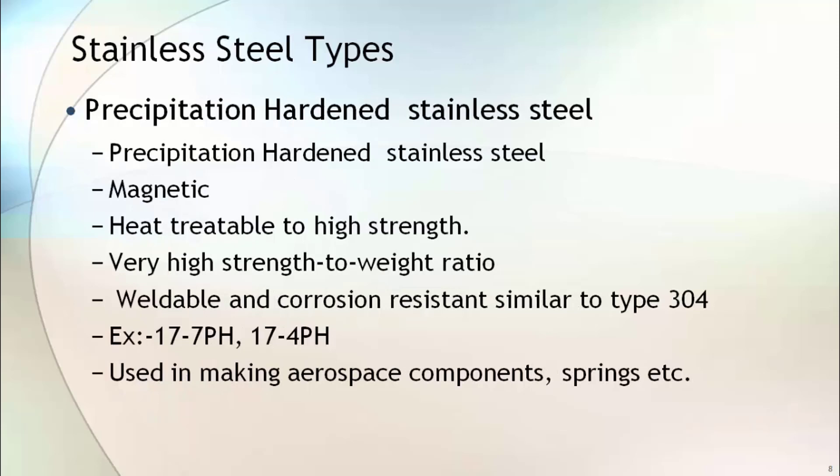Precipitation hardened stainless steel is heat treatable to very high strength. It has a very high strength-to-weight ratio with good corrosion resistance, which is as good as austenitic stainless steel grade 304. It is used in making aerospace components and springs.